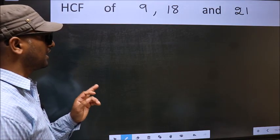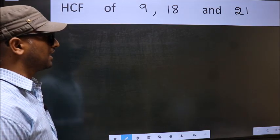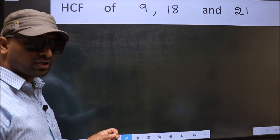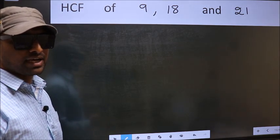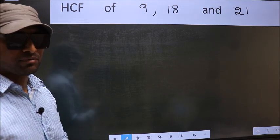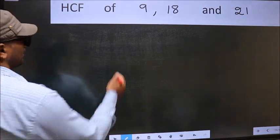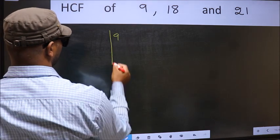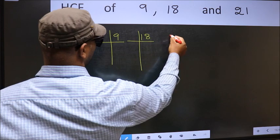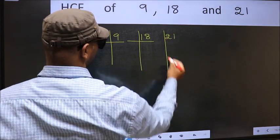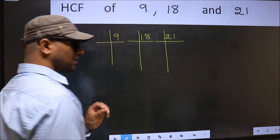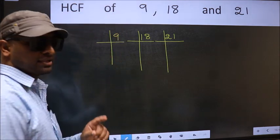HCF of 9, 18 and 21. To find the HCF, we should do the prime factorization of each number separately. What I mean is 9, 18, 21. This is your step 1.